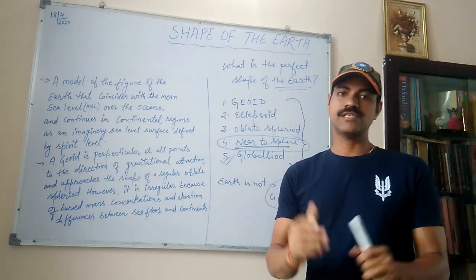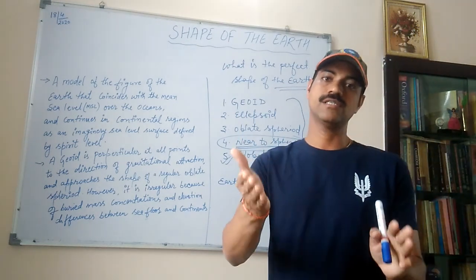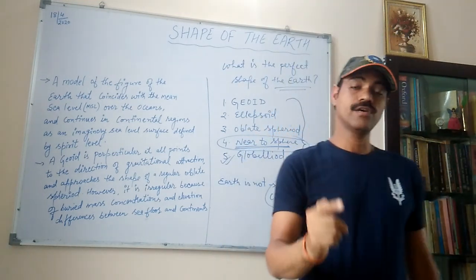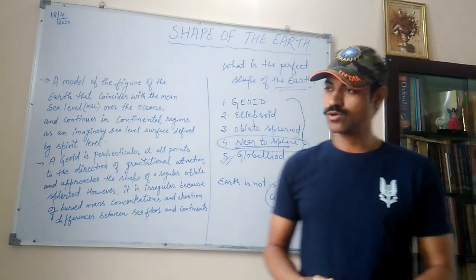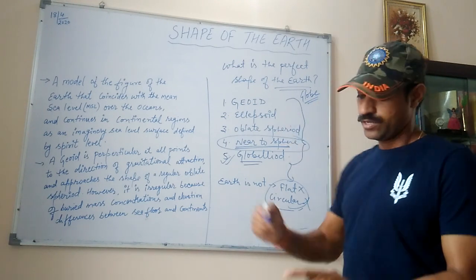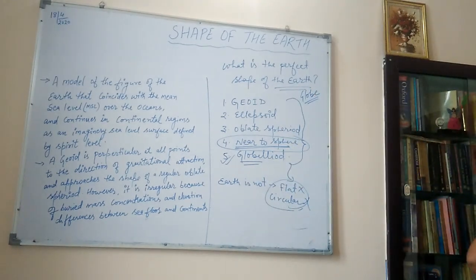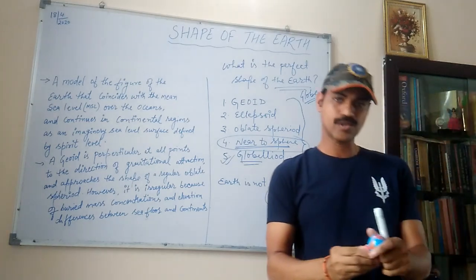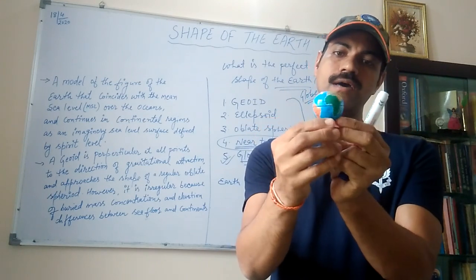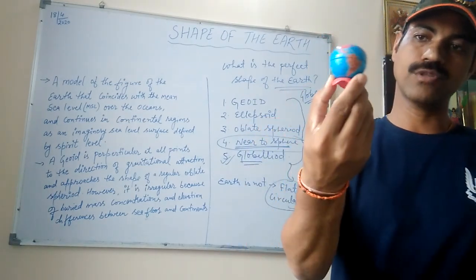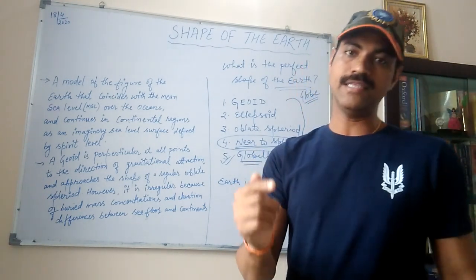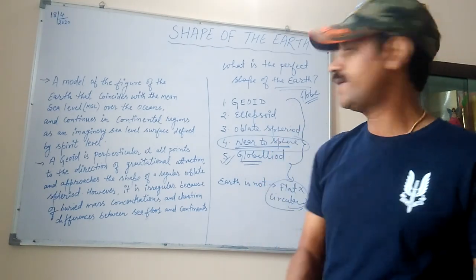The first shape is Globoid. The shape of the Earth is very near to a globe, and the model of the Earth is known as a globe. So the Earth's shape is called Globoid — it is globe-like. Clear?